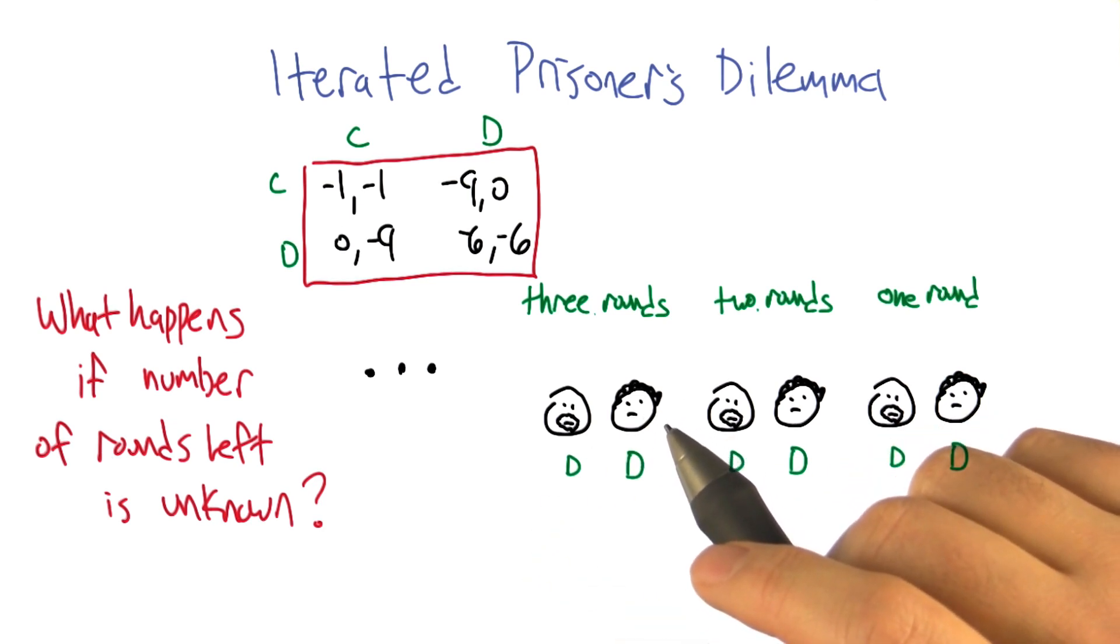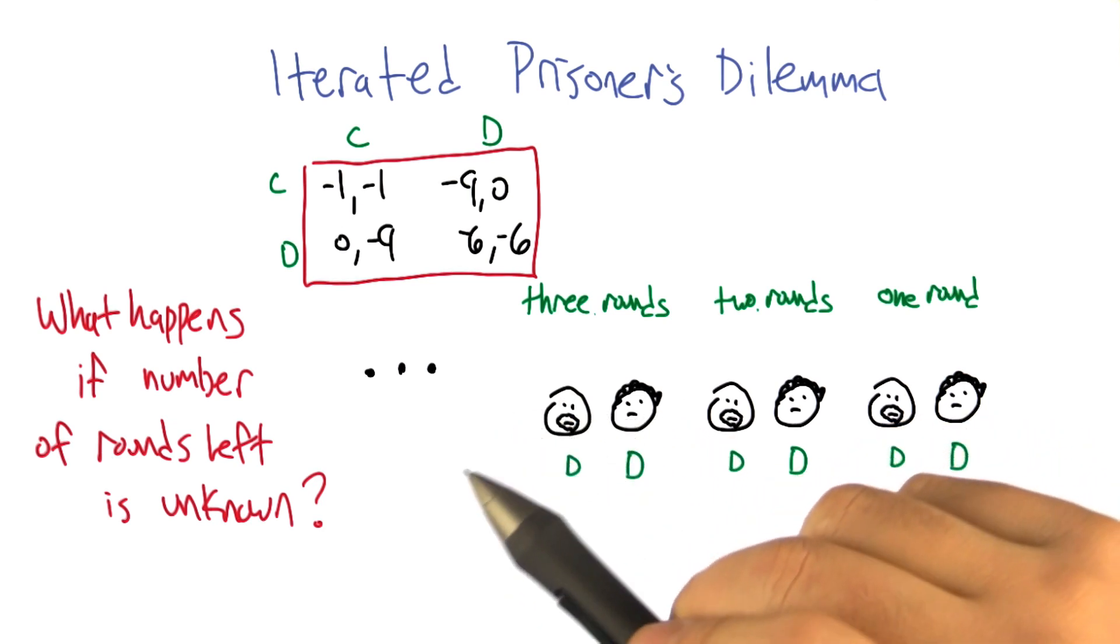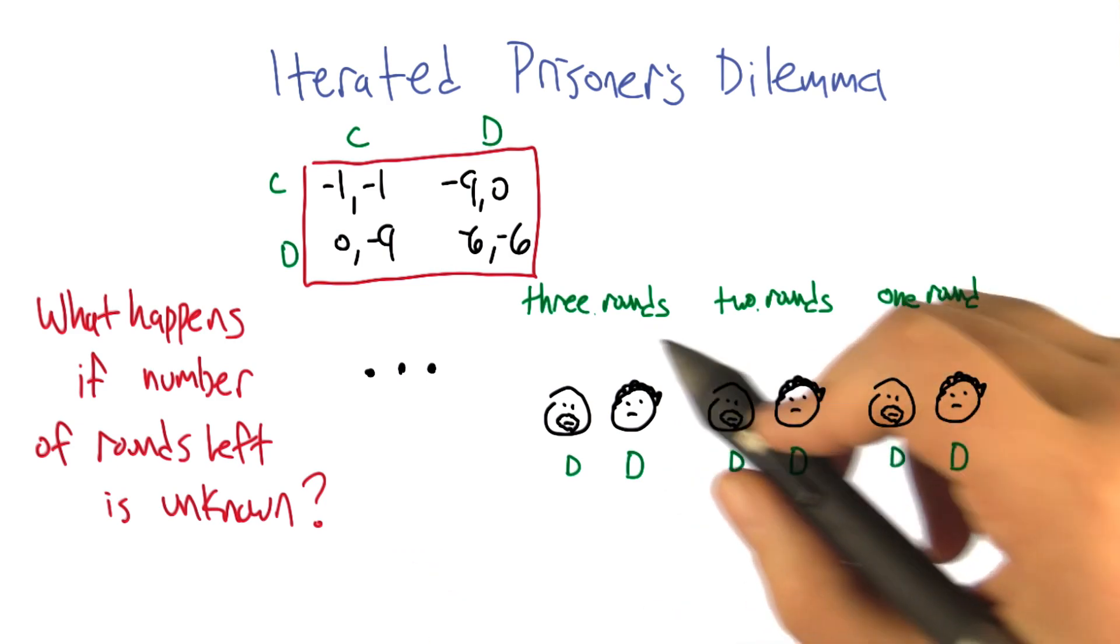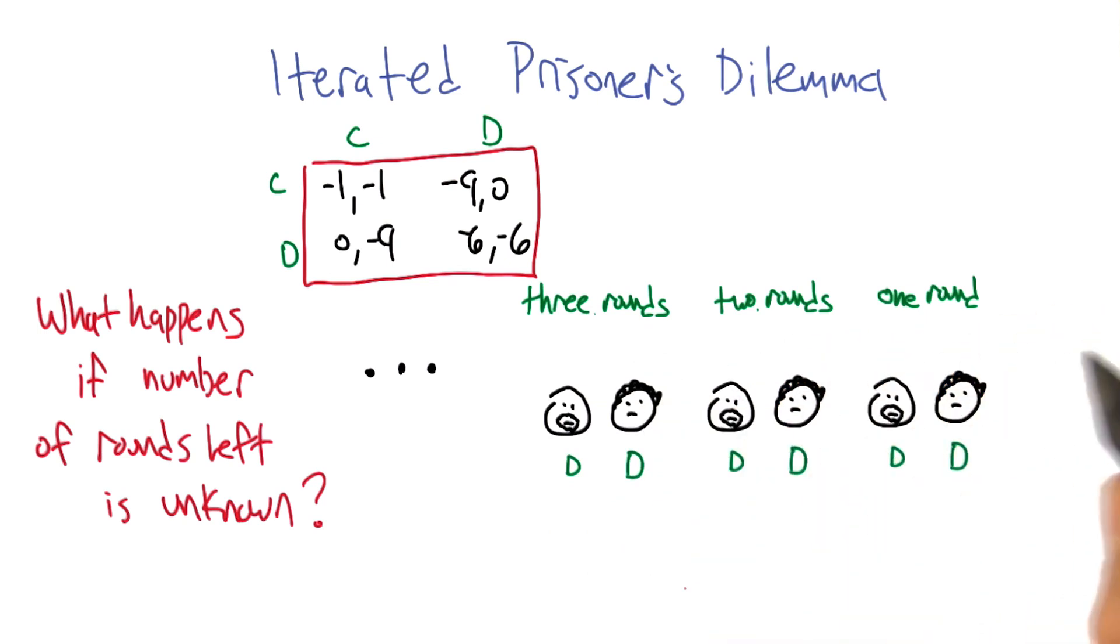So the question then becomes, what happens if the number of rounds left is unknown? What we realize is that if you know how many rounds are left, the whole thing comes unraveled and they're just going to defect forever. But we raise the issue of what happens if the number of rounds left is unknown.